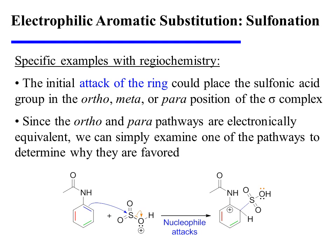Since the ortho and para pathways are electronically equivalent, we can simply examine one of them to determine why they are favored in this particular reaction. In this instance, the ortho sigma complex has been shown.